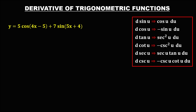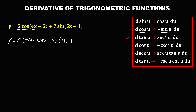Let's have this problem. For the derivative of trigonometric functions, this is the formula to find the derivative of a trigonometric function. For this given, y prime equals — just bring down the constant, then times the derivative of cosine. Since the derivative of cosine is negative sine, this becomes negative sine of 4x minus 5, times the derivative of u, which is the derivative of 4x minus 5. So this is 4. Then bring down the constant and times the derivative of sine.